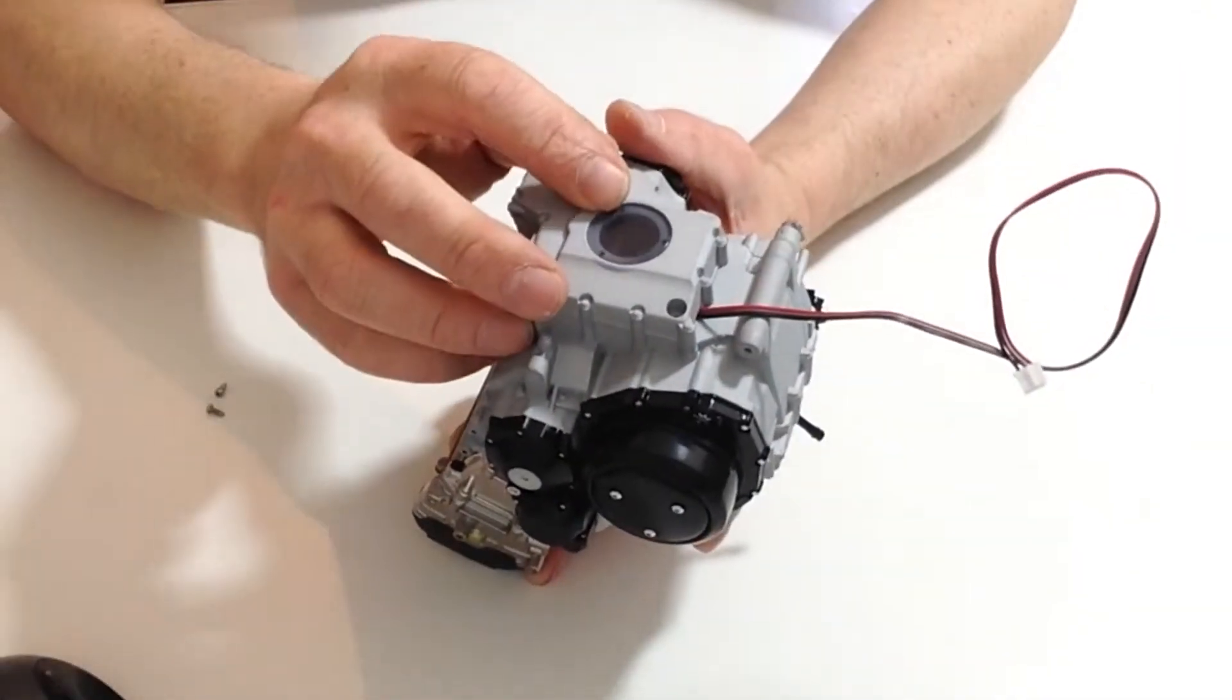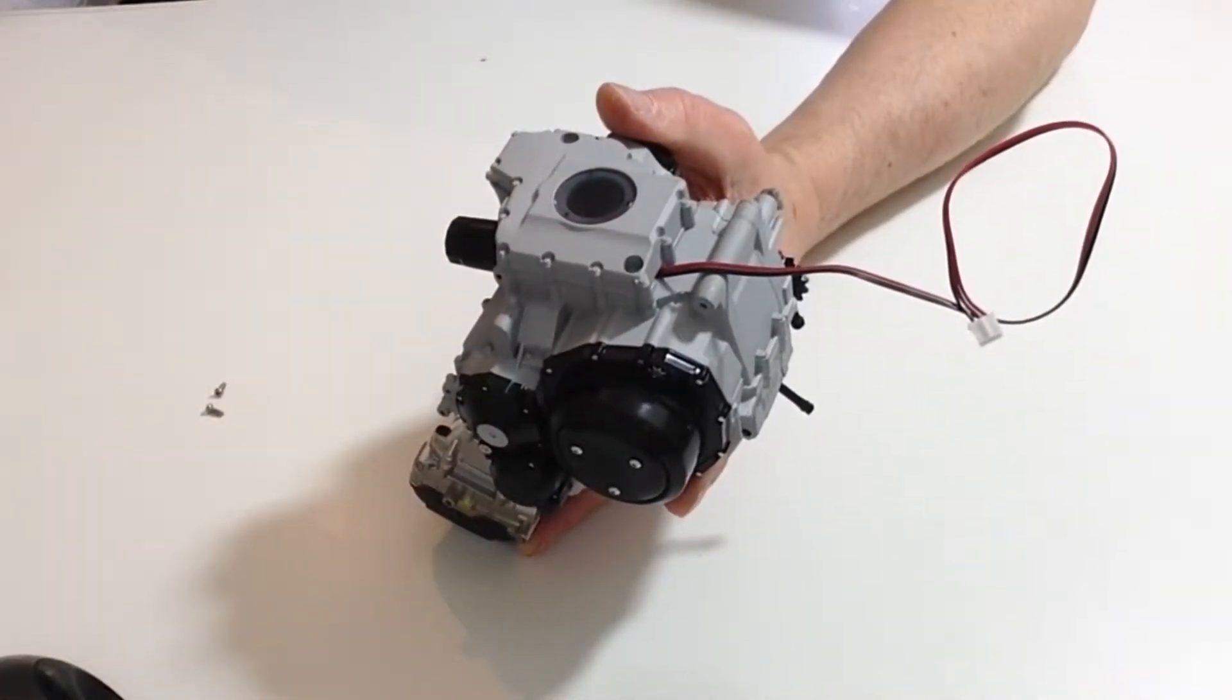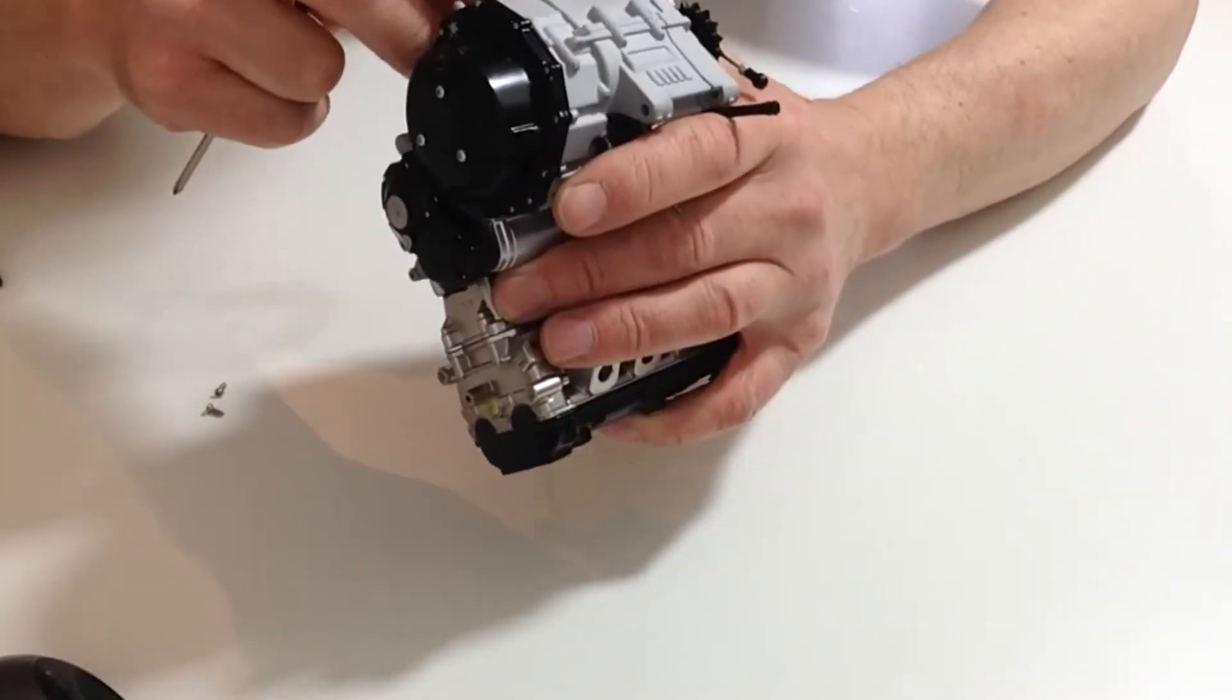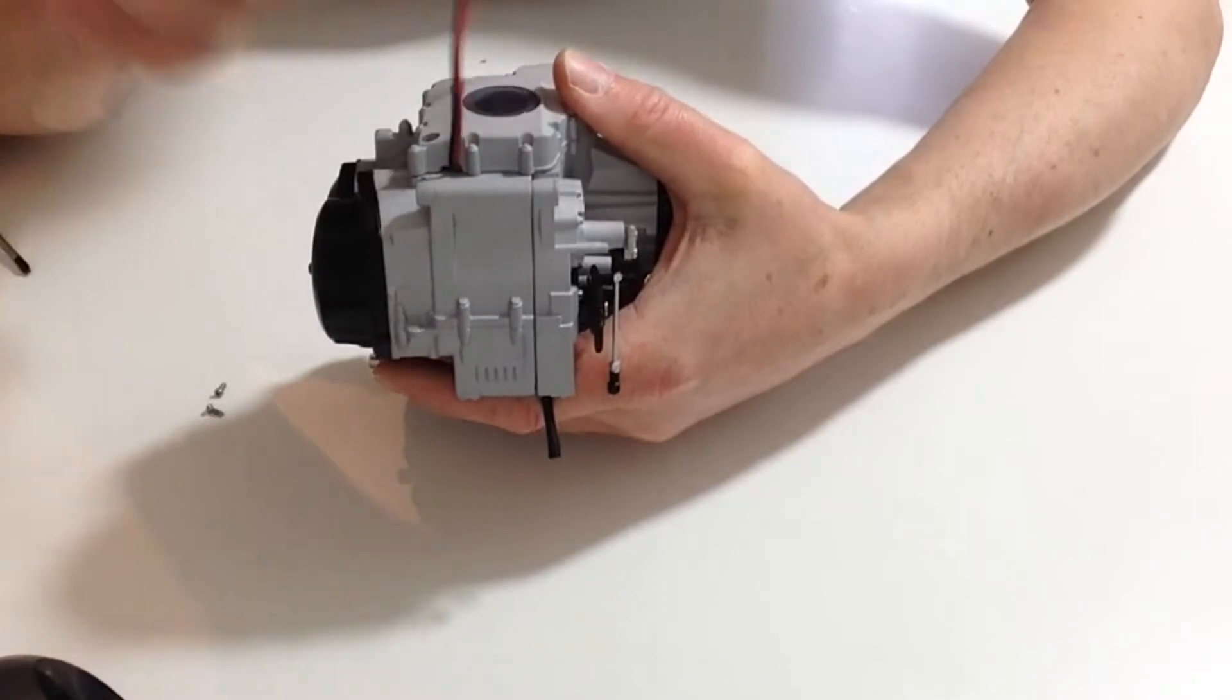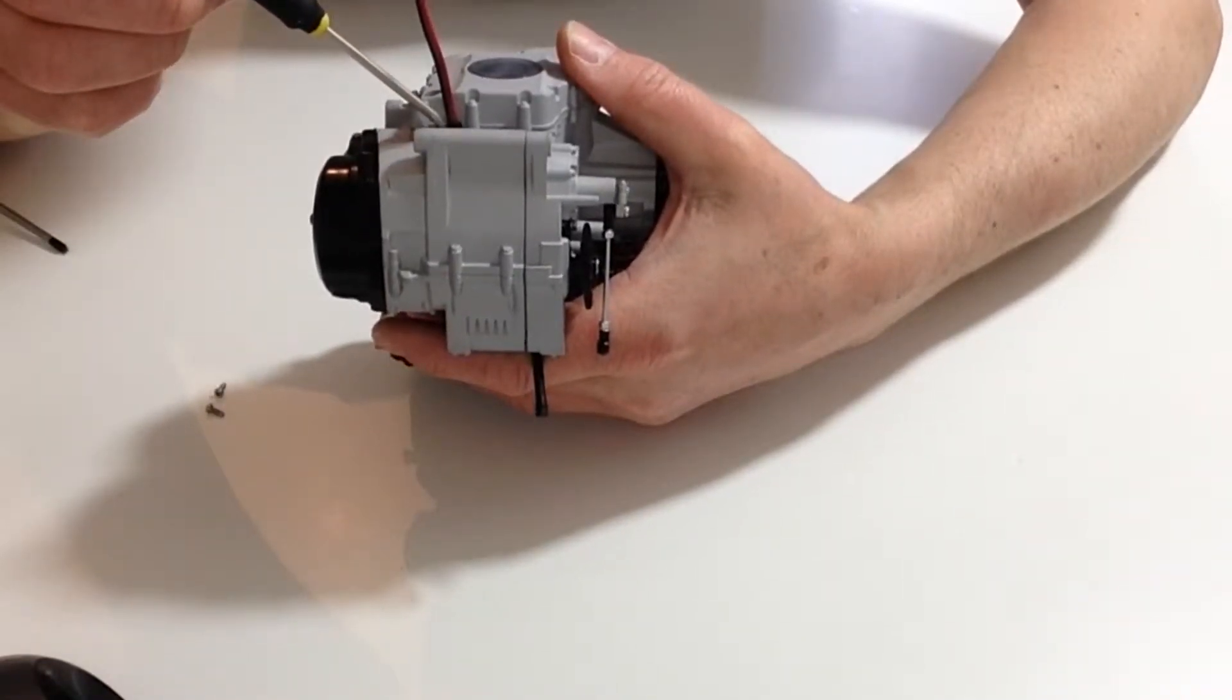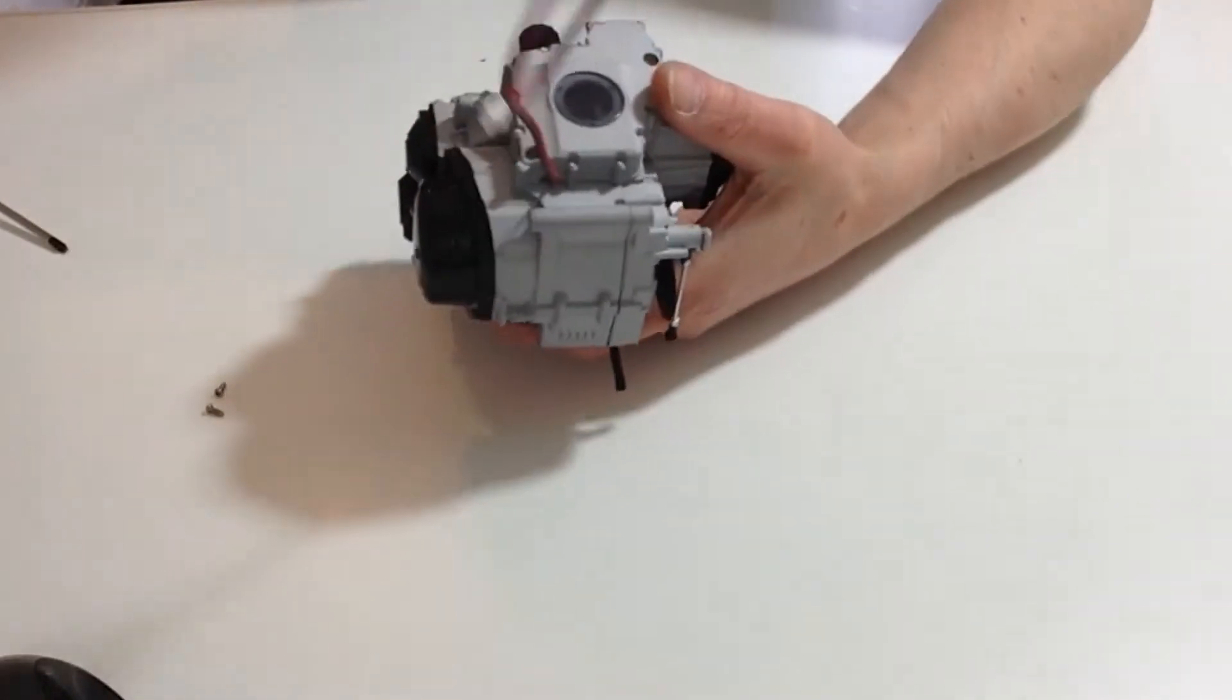Next, take the oil pan assembly from the previous stage and place it over the top, noticing that the cabling comes through this section here where there is a recess to allow the cabling. Once you have done that, screw it down with the screws provided.